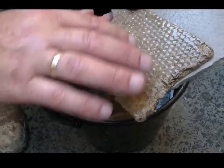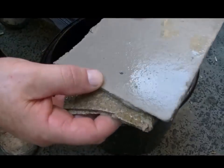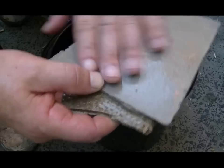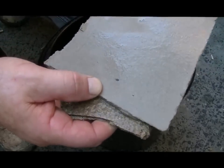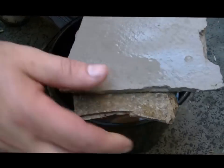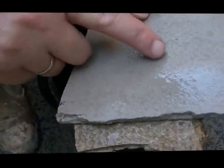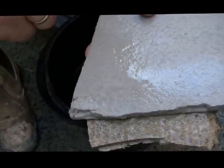...golf ball dimples - that it's asbestos. That's the good side of normal sheet, this is off a bathroom just recently. There's the back of it, you can see that it's got a slight texture to it.